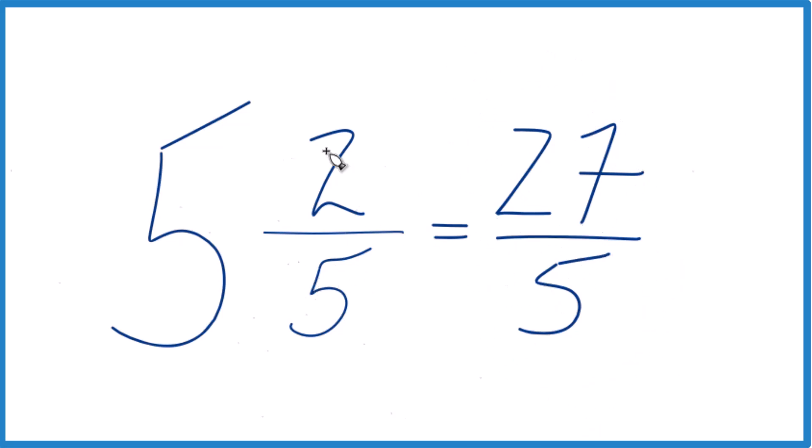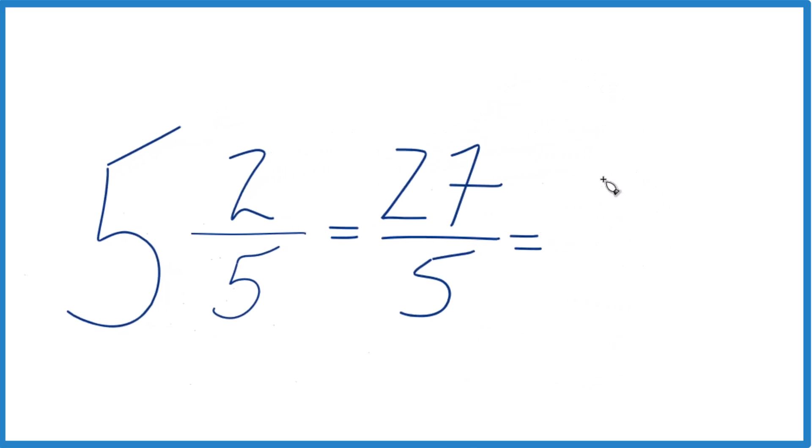You can even check your work here, because 5 goes into 27. 5 times 5, that would be 25 with 2 left over there, and then we just bring the denominator across, we get 5 and 2 fifths. That's the mixed number we started with, so we know we did this correctly.